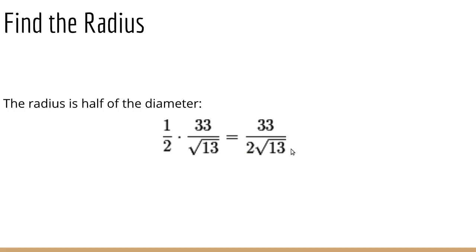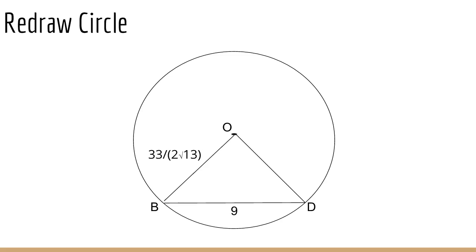So now we can find the distance from BD to the center. And the way I'm going to do that is because this diagram is so bad, I'm going to redraw the circle. So I've gotten rid of everything except BD, which is 9, and then I've said the center was O. And then the radius is 33 over 2 square root 13. That's OB. And then to find the distance, it's a perpendicular line from the center to the line, to the chord. So I've drawn OM. This is a right angle.